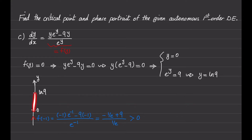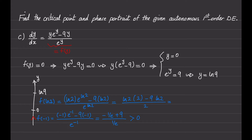For the next region between zero and ln(9), we choose y equals ln(2) and find the value of f(y) at ln(2). In the numerator we have two times ln(2) minus nine times ln(2) divided by two, which gives minus seven divided by two times ln(2), and it's negative, so we will have a downward arrow.